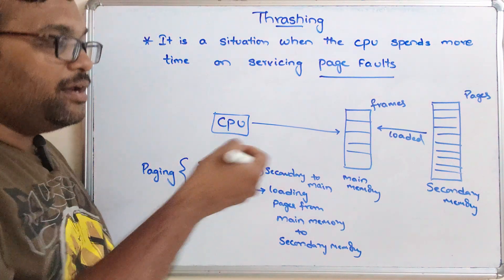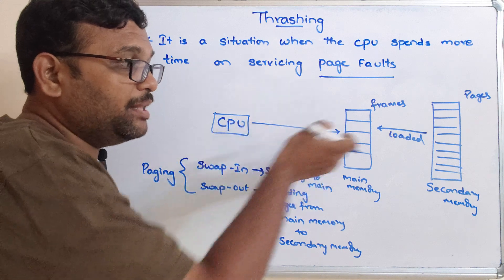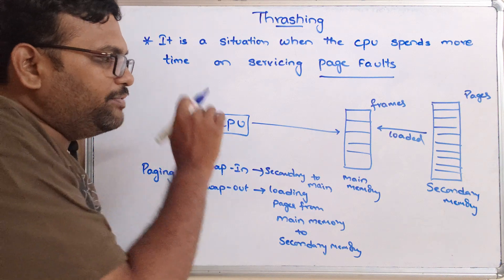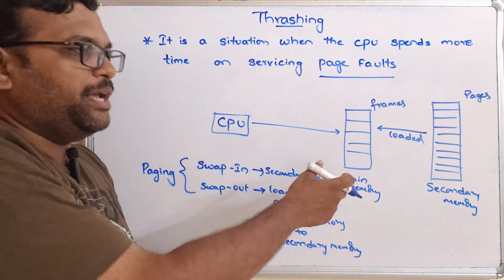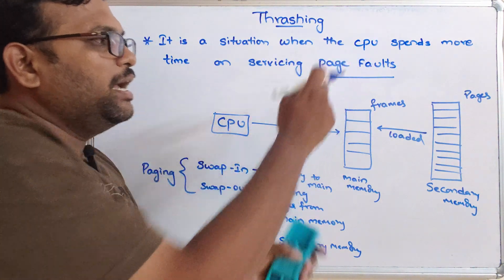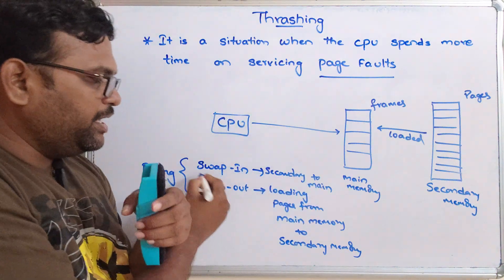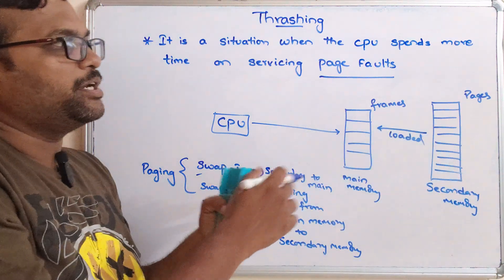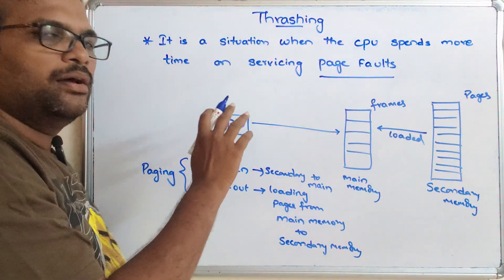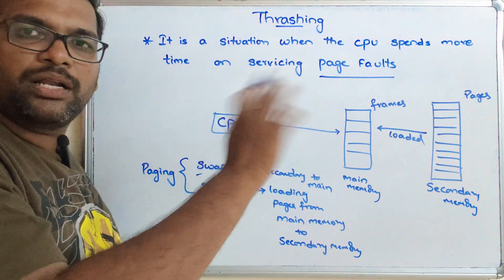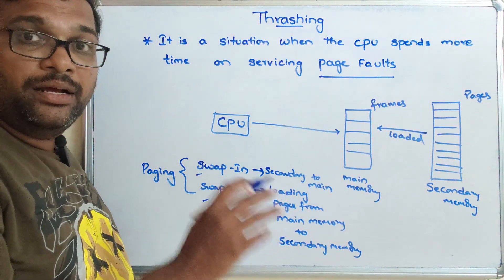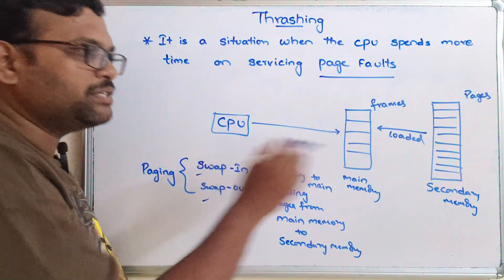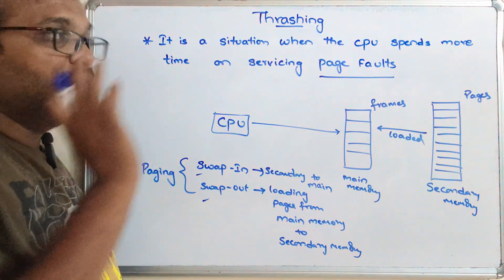If the CPU doesn't find the required page in main memory, that is called a page fault. When a page fault occurs, the OS applies swap in and swap out operations to load the required page into main memory. The CPU ends up spending a lot of time servicing these page faults rather than actually executing the process — spending time on paging rather than execution.